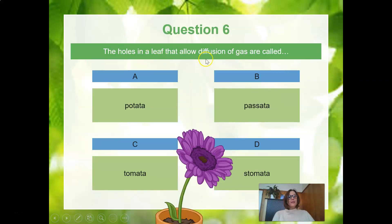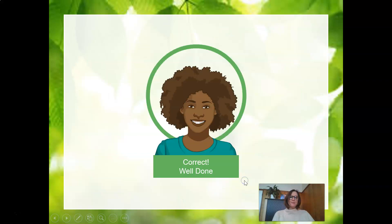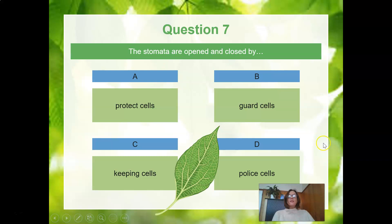The holes in a leaf that allow diffusion of gas are called — A, patata; B, passata; C, tomato; or D, stomata? We learned about these little holes — the answer is D, stomata. The stomata are opened and closed by — A, protect cells; B, guard cells; C, keeping cells; or D, police cells? The correct answer is guard cells.